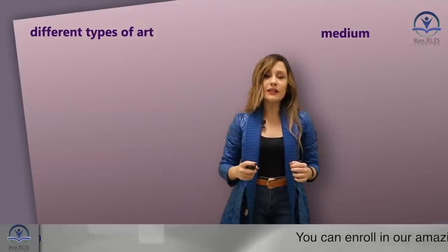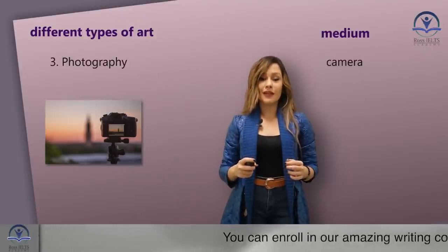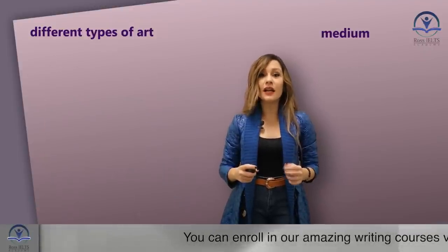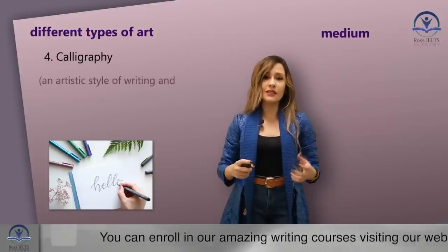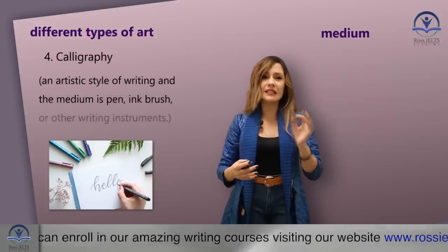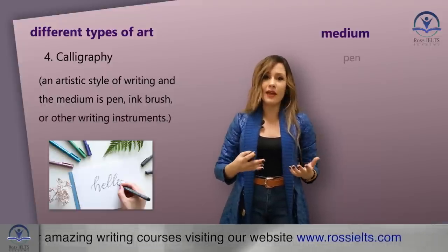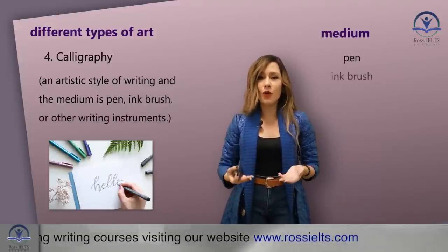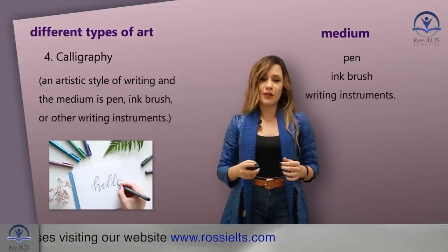The next type is photography. After that is calligraphy — this is an artistic style of writing, and the medium is of course a pen, ink brush, or other writing instrument.